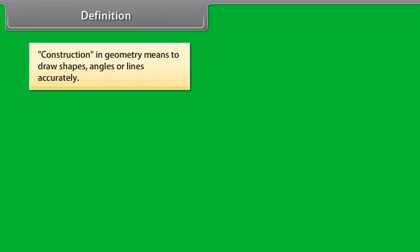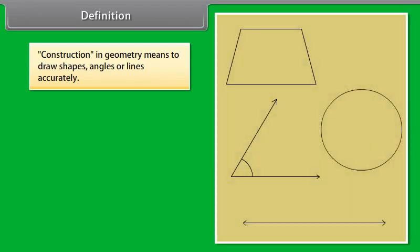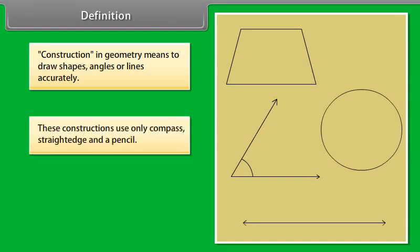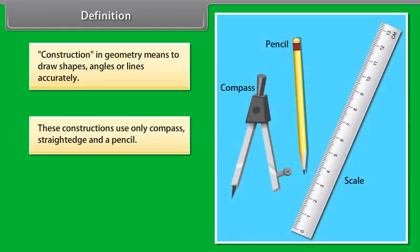Construction in geometry means to draw shapes, angles, or lines accurately. These constructions use only a compass, straight edge (i.e., ruler), and a pencil. In some constructions, we may also use a graduated scale and protractor, where measurements are also required.